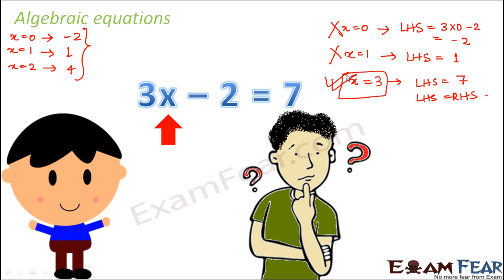So what is the difference? In the first case, when there was no equality sign, x could take any value. But the moment we included the equality sign, x could take only a specific value — only the value 3. Other than 3, if you put any other value, the equation doesn't hold true. This is where the algebraic expression and the algebraic equation differ. For an algebraic equation, there is an equality sign involved, with certain things on the left hand side and the right hand side, and we need to ensure left hand side equals right hand side.